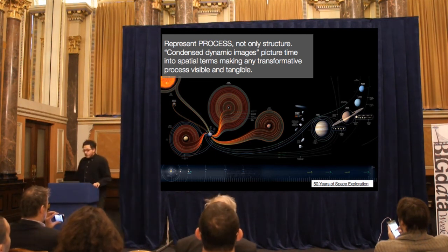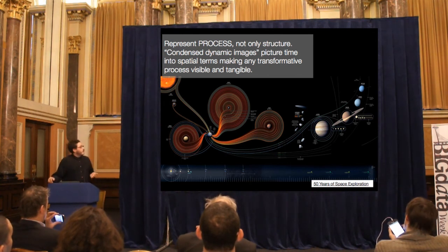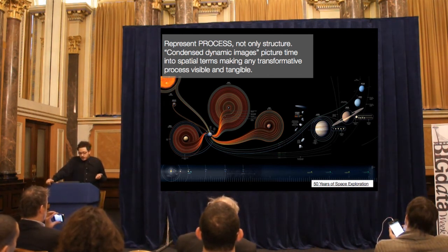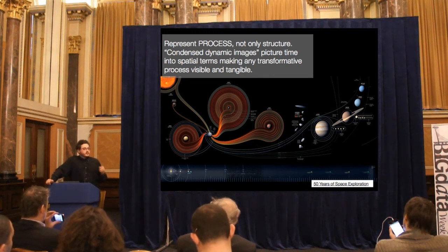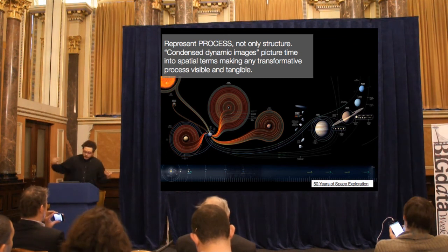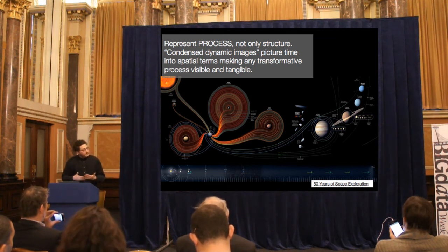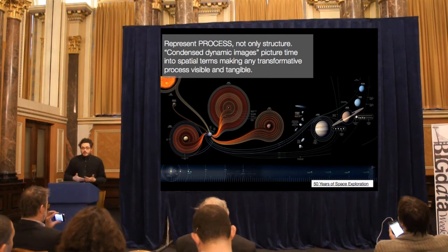Another reason is process data visualization — not only showing the structure of a data set, but using condensed dynamic images that can represent time in spatial terms, making the transformative process visible and tangible so you can see how things evolve over time.